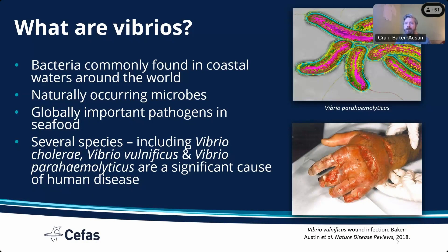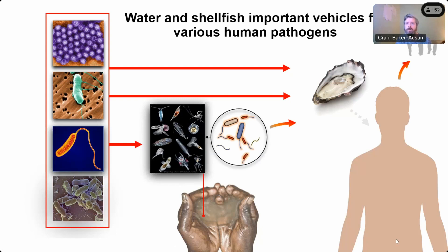This picture on the right-hand side shows a horrible wound infection. This was a man in Japan who cut the back of his hand looking for shrimp in a fish market, and he got a necrotizing wound infection and unfortunately died. So this sort of example shows that these are really potent human pathogens that can cause really devastating diseases. We know that water and shellfish are important vehicles for a range of different human pathogens — we've known about this for over 200 years. The classic example is cholera, as Nick just mentioned.